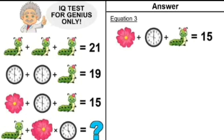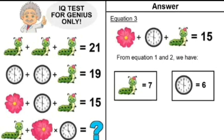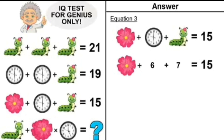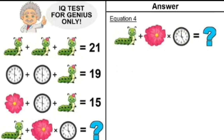Moving on to equation number 3: flower plus clock with time 6 plus caterpillar with flower equals 15. From equations 1 and 2, we have the value of the clock and the caterpillar with flower, so putting those in: flower plus 6 plus 7 equals 15. The value of flower is equal to 2.